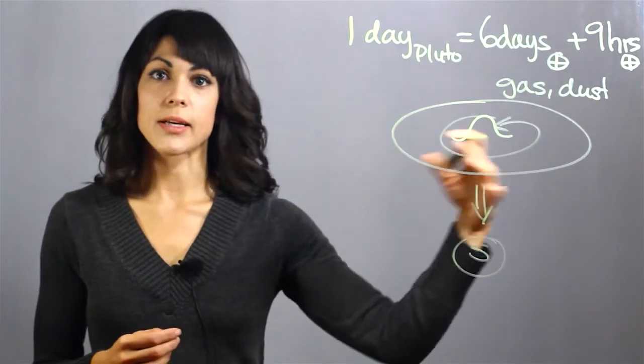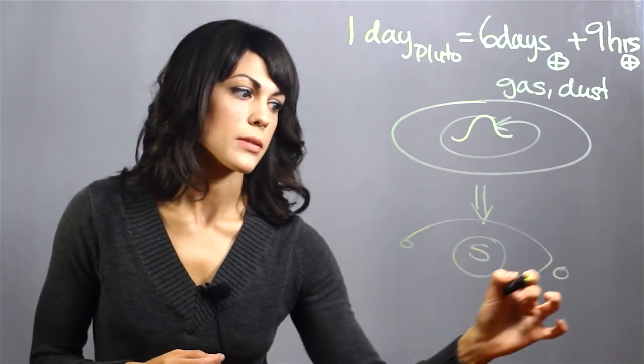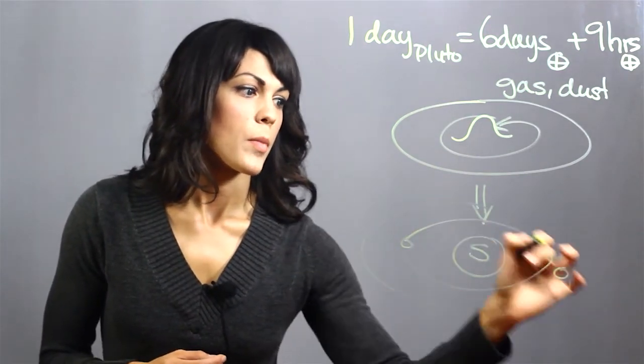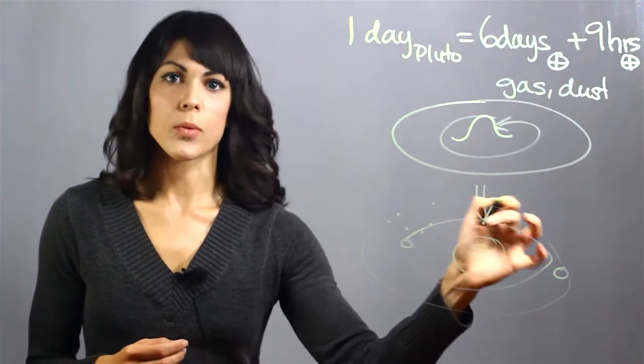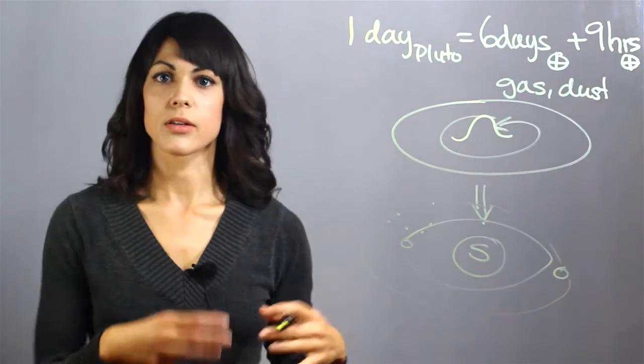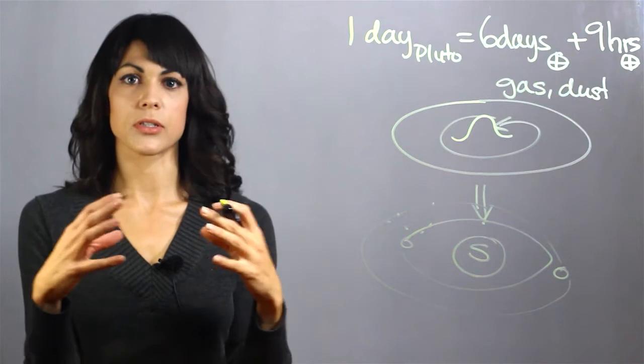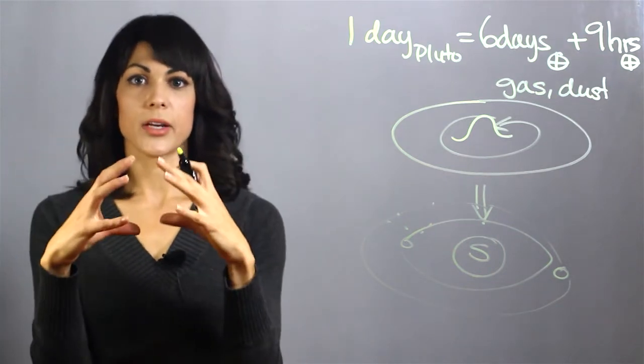What you have left over in the spinning cloud of gas and dust is a bunch of debris flying around in orbits, but there's also a lot of gas and dust all around the orbits. So these little pieces of rock start collecting more gas and dust until they have tons of collisions and they just become a planetary body.